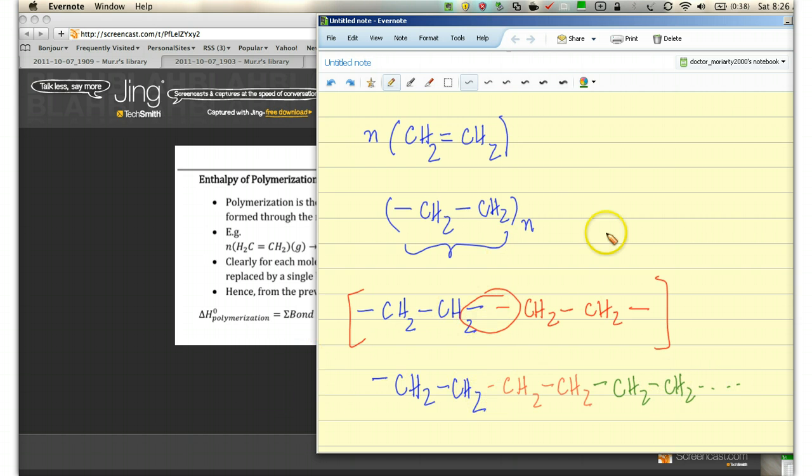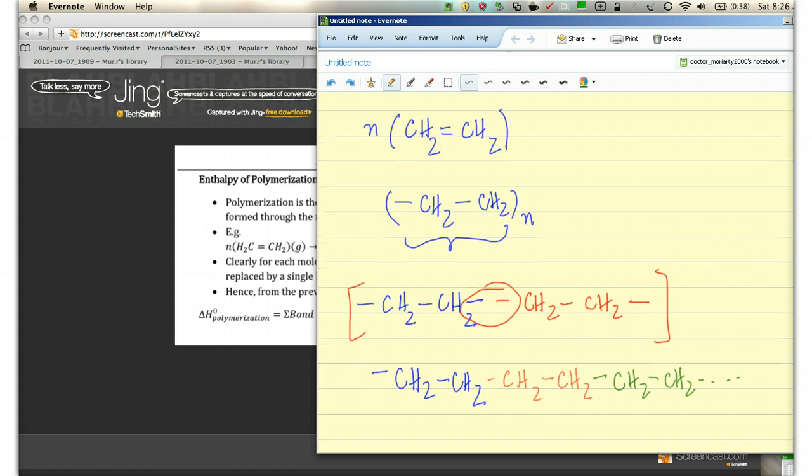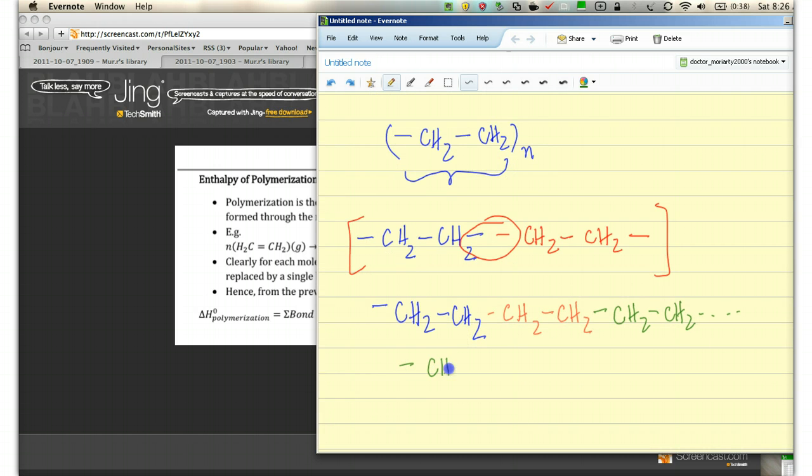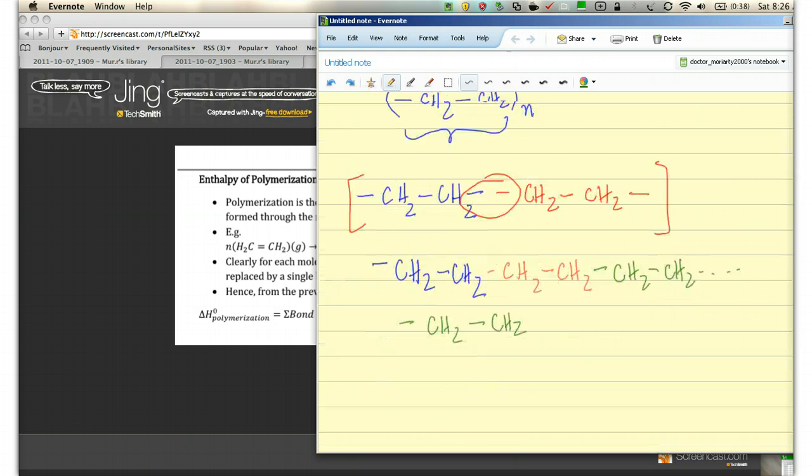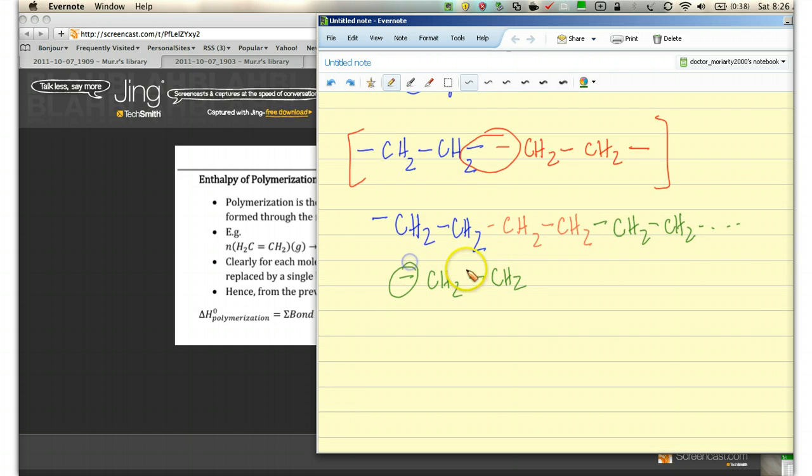So clearly the repeating unit is what we've got over here, which is CH2, CH2. So now think about what's happened. Originally you had one single bond, one double bond. And now you've got two single bonds in the repeating unit.